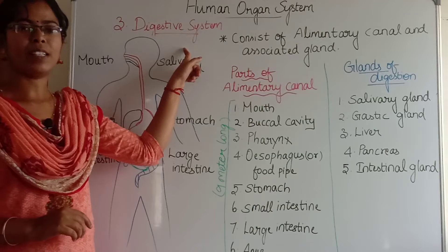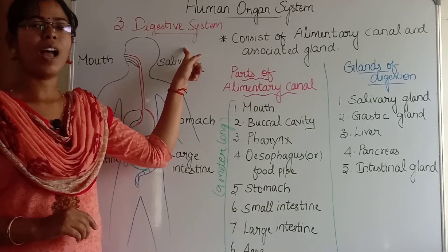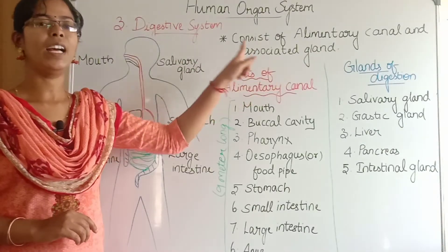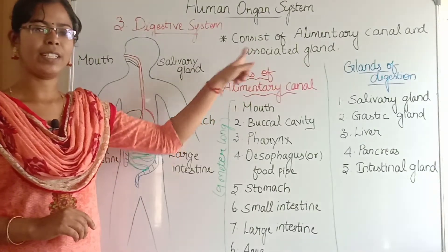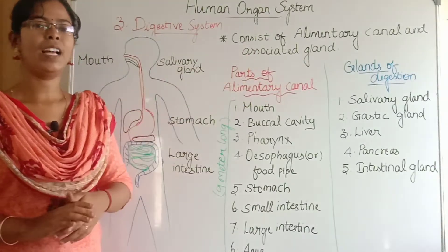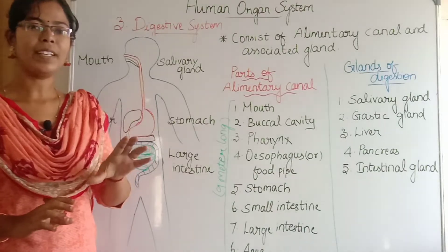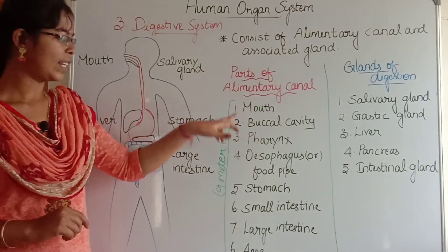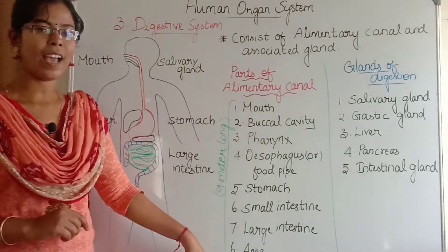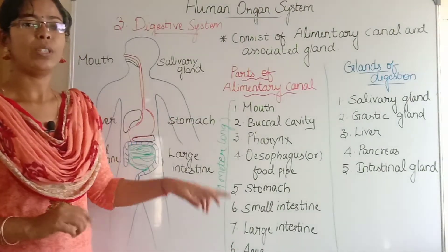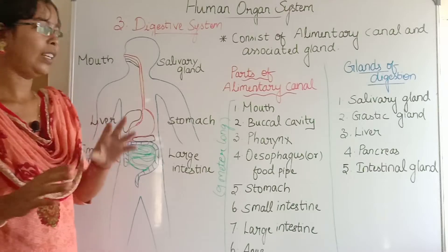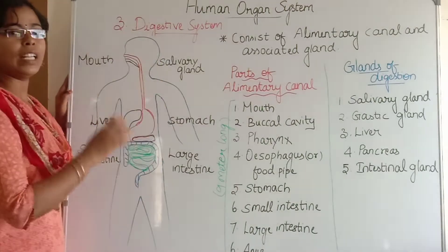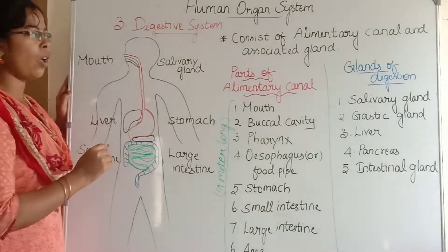The digestive system consists of the alimentary canal and associated glands. The alimentary canal starts from the mouth and ends at the anus. The total length of the canal is about 9 meters long.